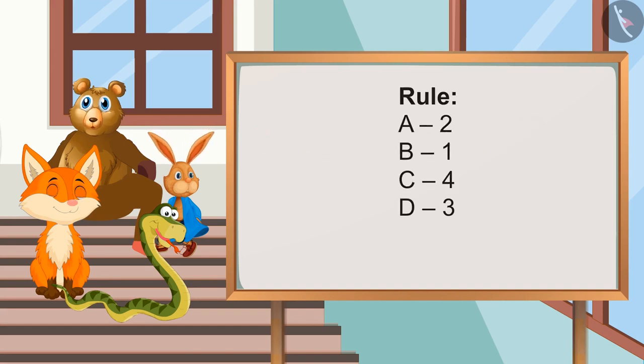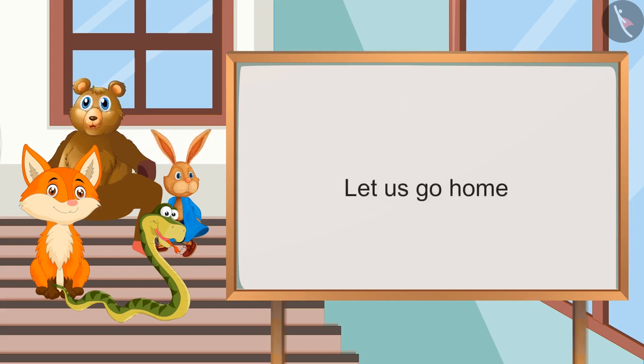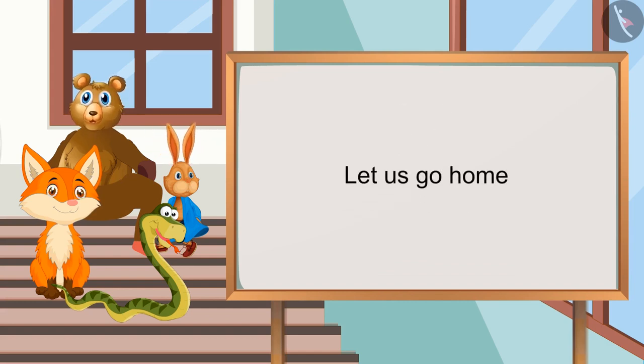If we put alphabets in this order, 2 for A, 1 for B, 4 for C, 3 for D, etc. Then how will we write, let us go home, in number code?